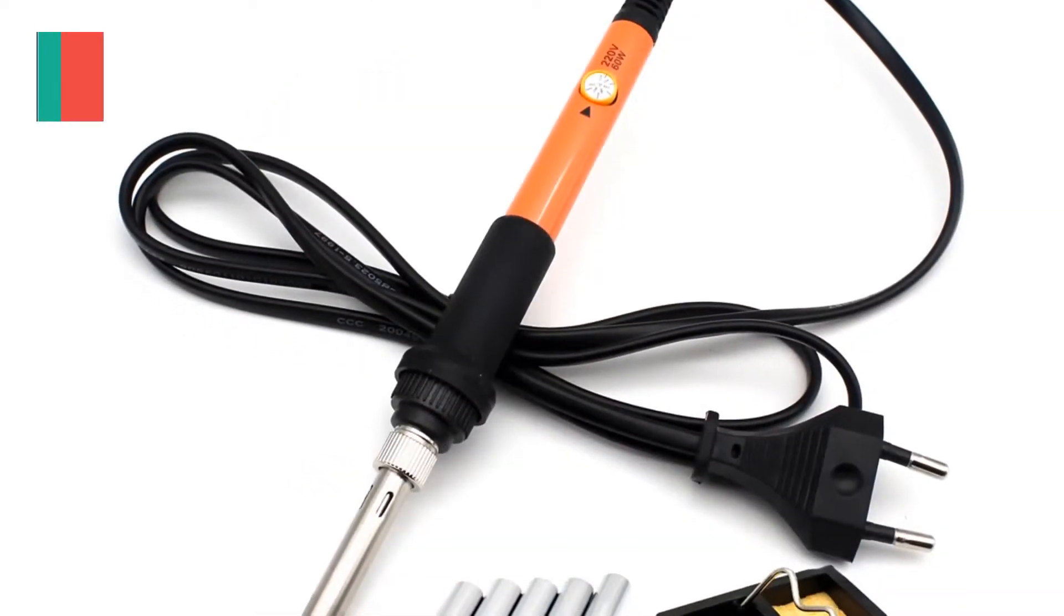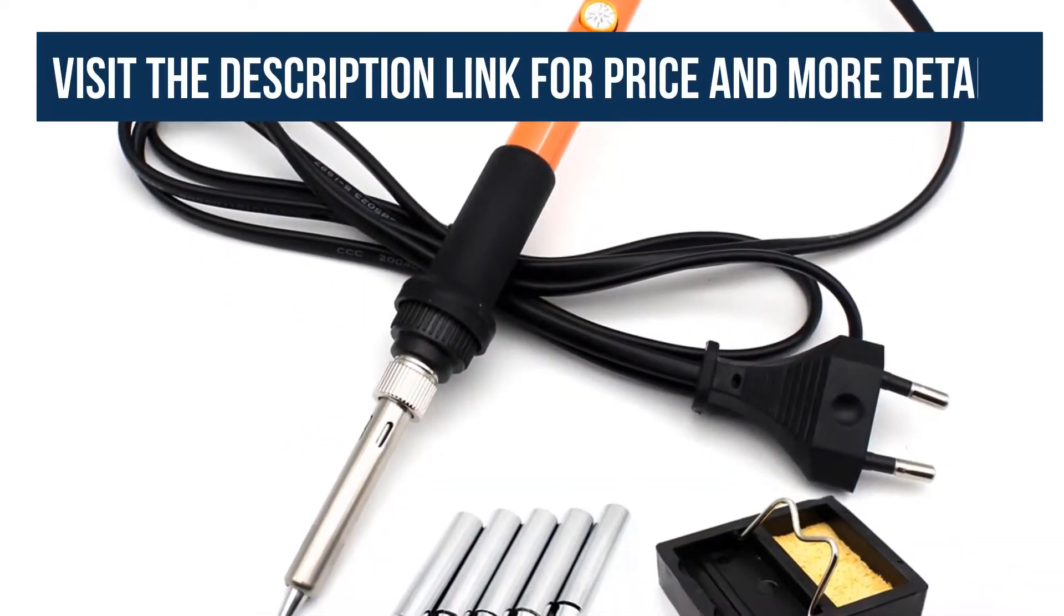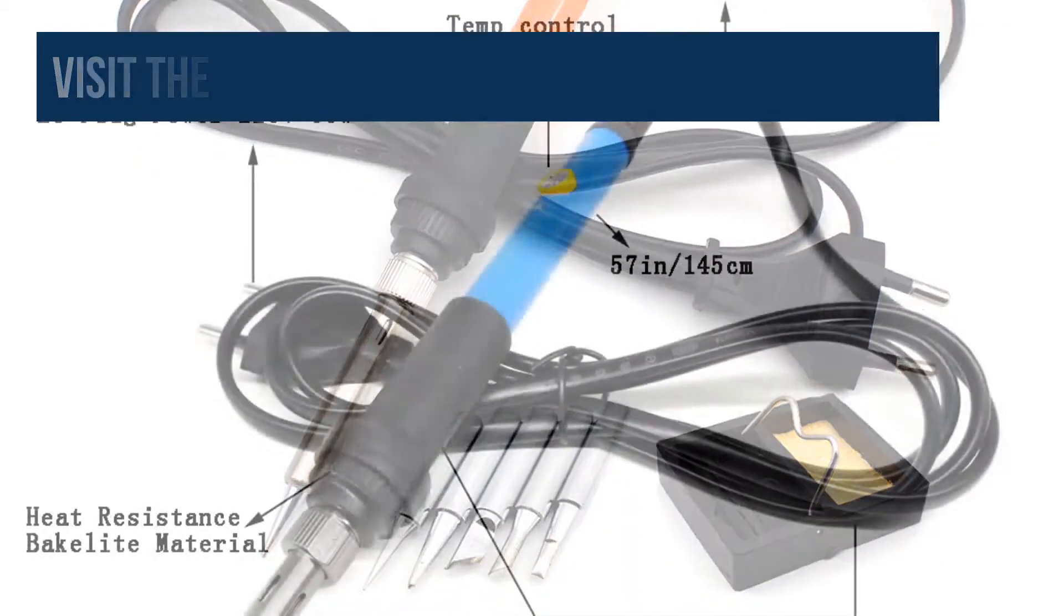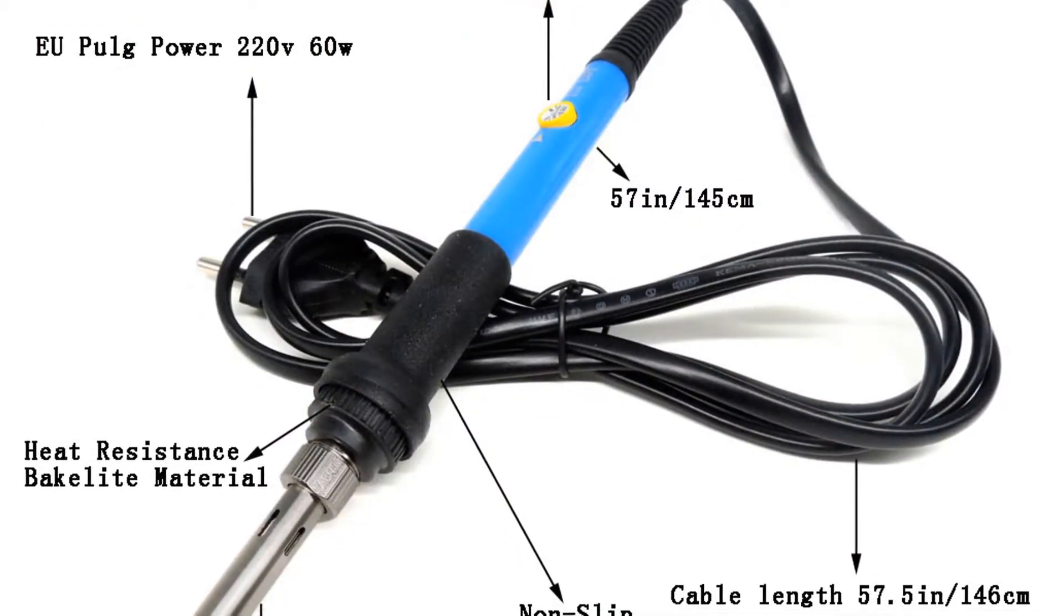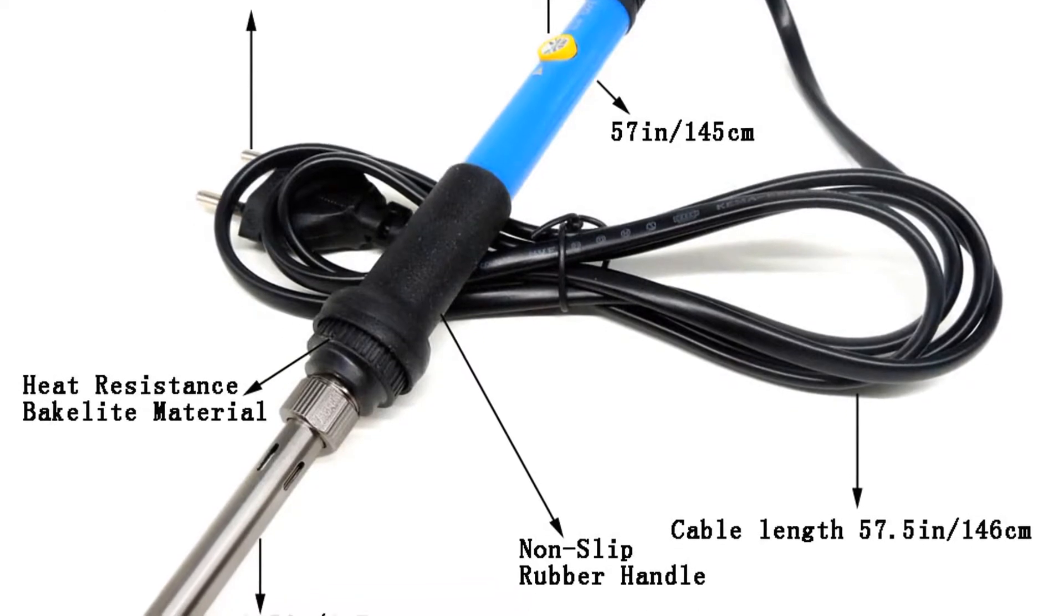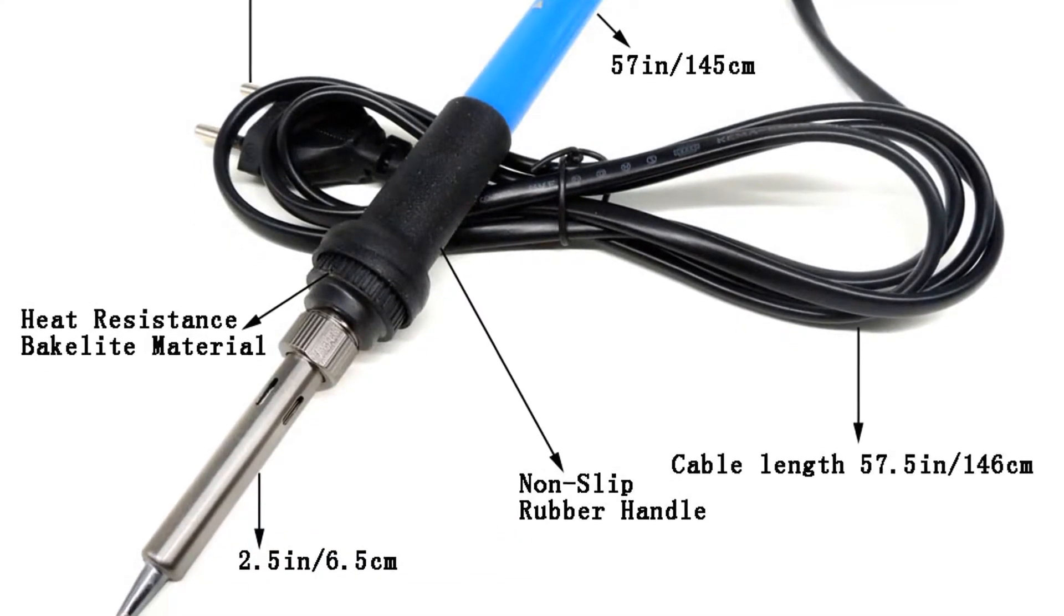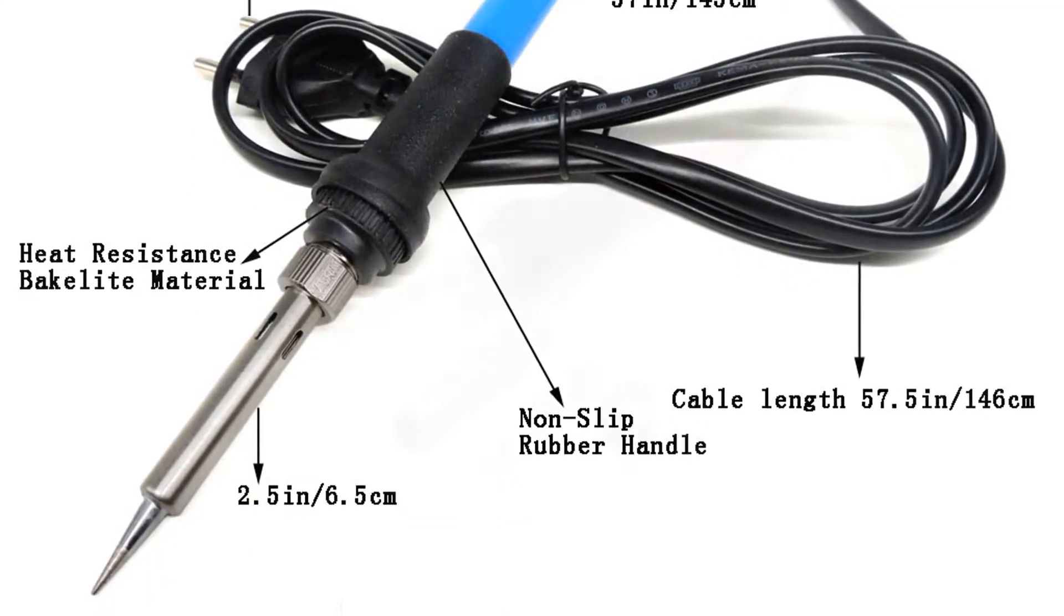Adjustable temperature controlled soldering iron, 200 to 450 degrees centigrade. There is a special thermostat circuit to control the temperature and you can adjust the temperature according to your need by the knob on the electronic soldering iron.